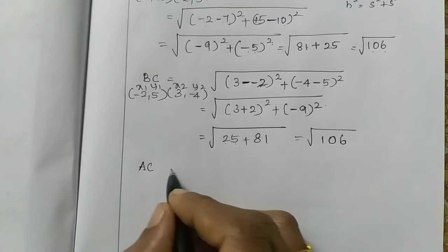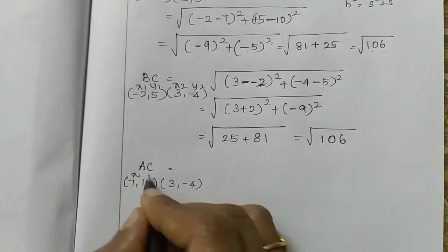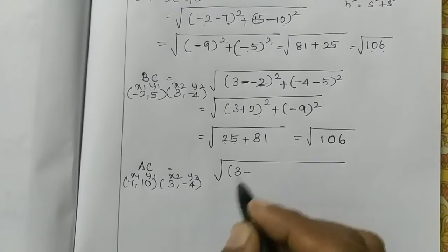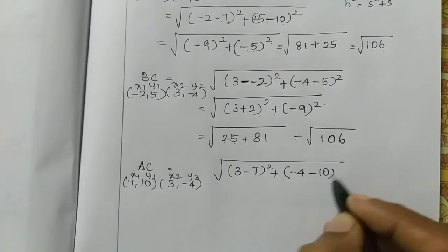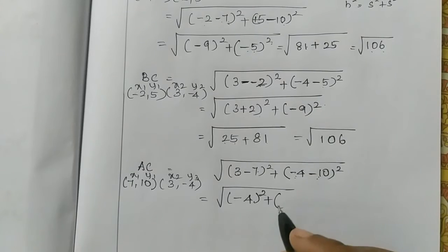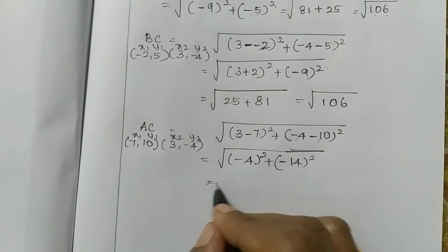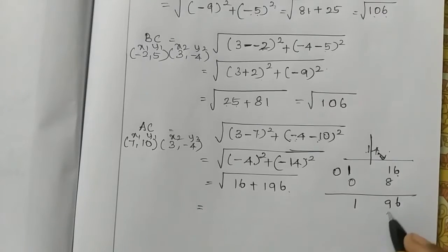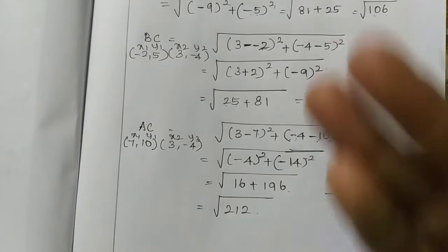Now distance AC. A is (7,10) and C is (3,-4). Root of (3 minus 7) whole square plus (-4 minus 10) whole square. That is root of (-4) squared plus (-14) squared, which is root of 16 plus 196 = root of 212. So AC = root of 212.